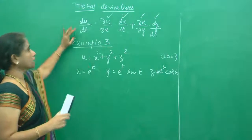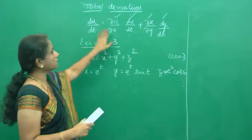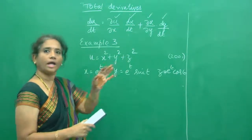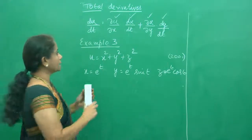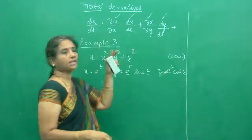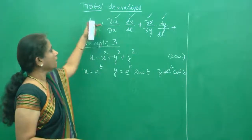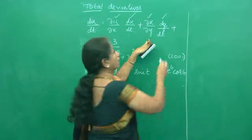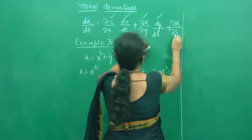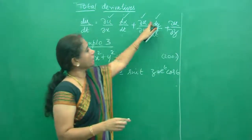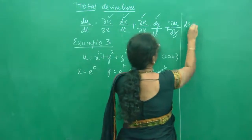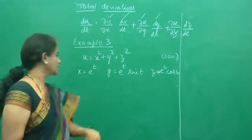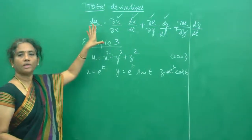This is a little bit extension of this formula. As you know, this formula is written for x and y, but we can very well include z also, and it can be included for n number of variables — that's why we are doing this example. So can you tell me what will be the next term if z is there? There is dou u by dou x, dou u by dou y — so what will be the next one? It will be dou u by dou z, and you have dx by dt, dy by dt, so what will you get here? dz by dt. So the formula can be extended for any number of variables.